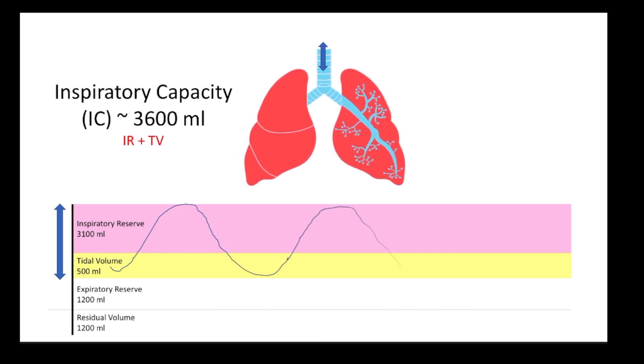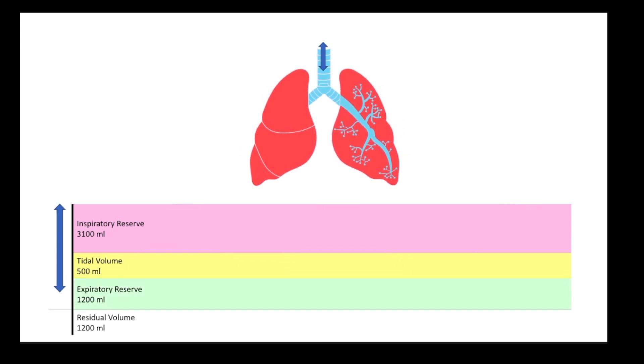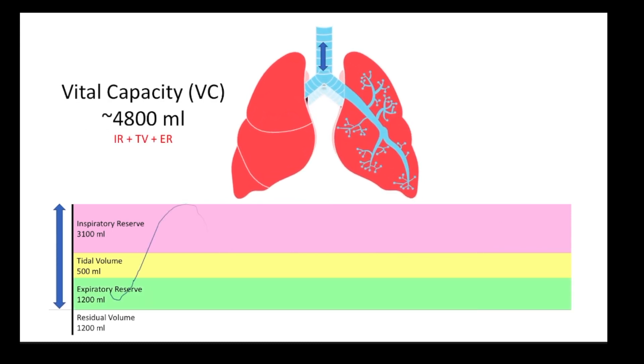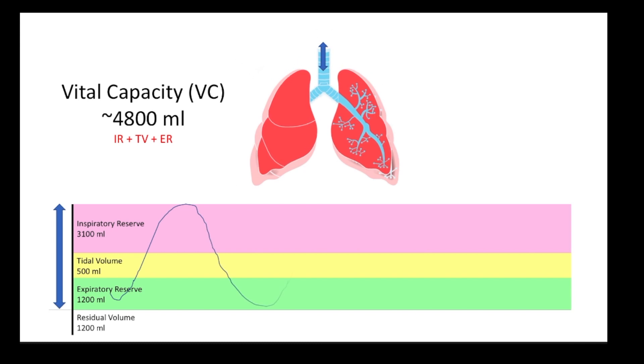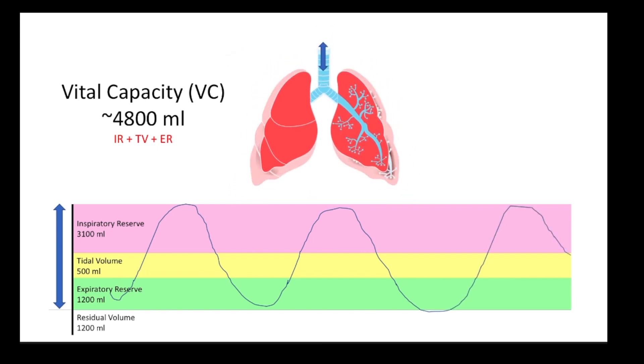Next let's look at vital capacity. If you've ever gone for a run you've known that you've been breathing in harder and exhaling harder. We're tapping into both of our inspiratory and expiratory reserves. This is measured in clinical practice by having someone taking a big breath and then blowing everything out as hard as they can until they can no longer breathe. It is the sum of inspiratory reserve, tidal volume, and expiratory reserve.